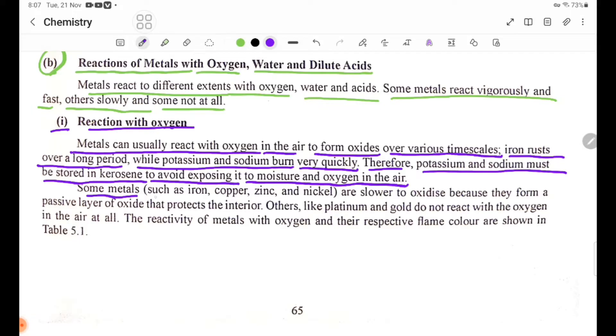Some metals such as iron, copper, zinc and nickel are slower to oxidize because they form a passive layer of oxide that protects the interior. Others, like platinum and gold, do not react with the oxygen in the air at all.